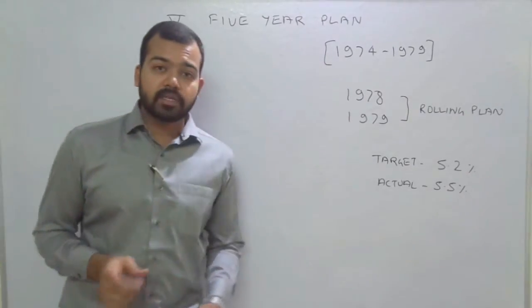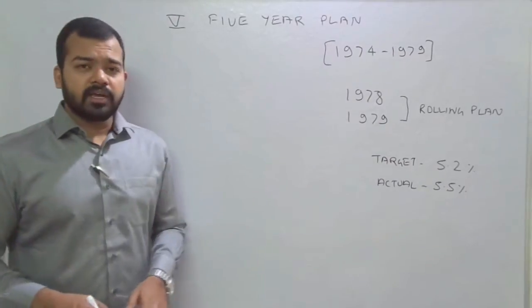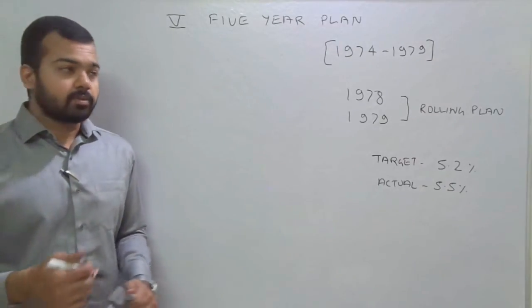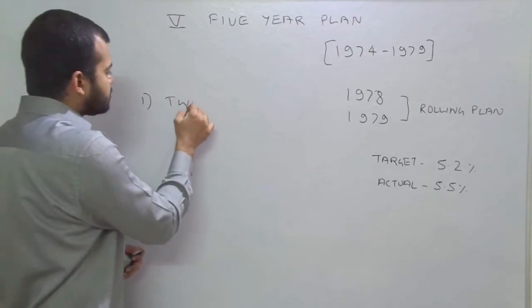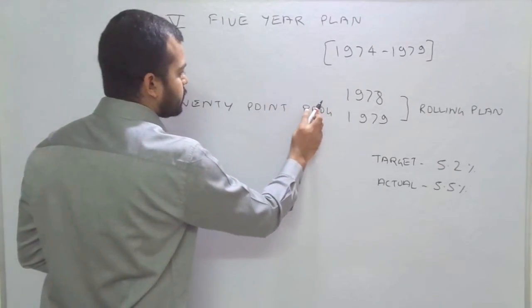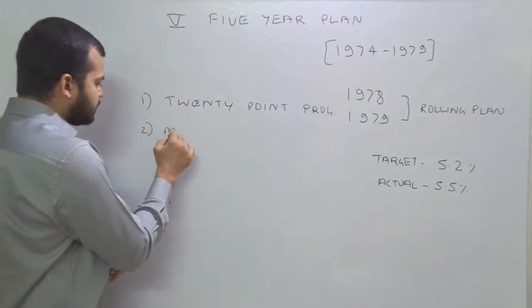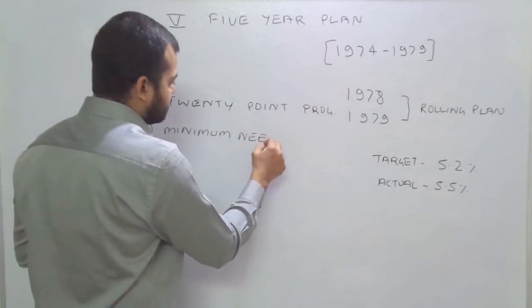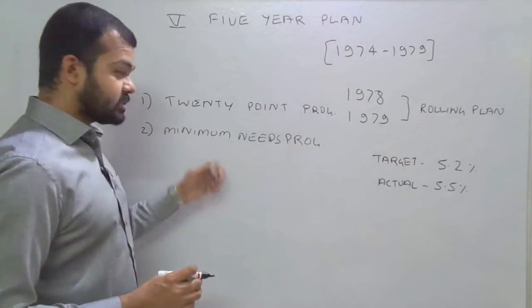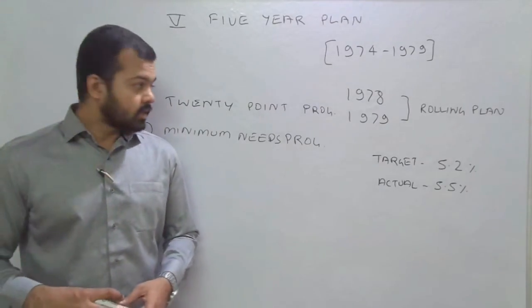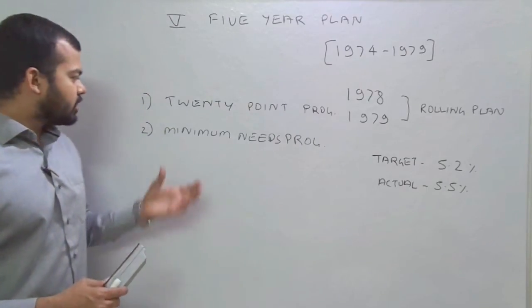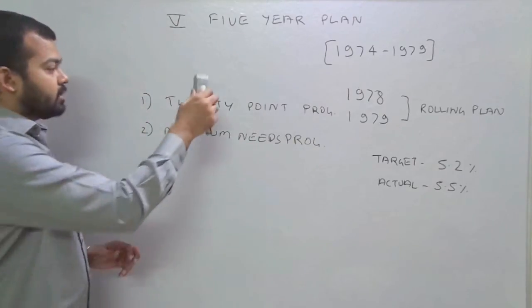Two important flagship programs were the highlights of this Five Year Plan. The first was the 20 Point Program, introduced in 1975. The second was the Minimum Needs Program, which focused on providing basic amenities in rural areas such as electricity, rural roads, clean drinking water, sanitation, and cleanliness.